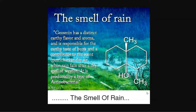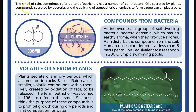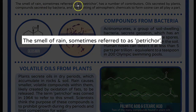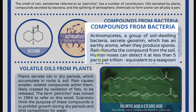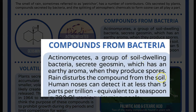Geosmin refers to a distinct earthy flavor and aroma-like substance which is responsible for the earthy taste of beets. They are commonly referred to as a contributor of the scent in the soil, called petrichor. The smell of rain is sometimes referred to as petrichor. It is mainly due to certain soil-dwelling bacteria such as Actinomycetes and certain cyanobacteria, which contribute to the production of Geosmin, giving an earthy aroma when they produce certain spores. Rain disturbs the Geosmin compounds present in the soil, leading to the formation of the earthy odor.